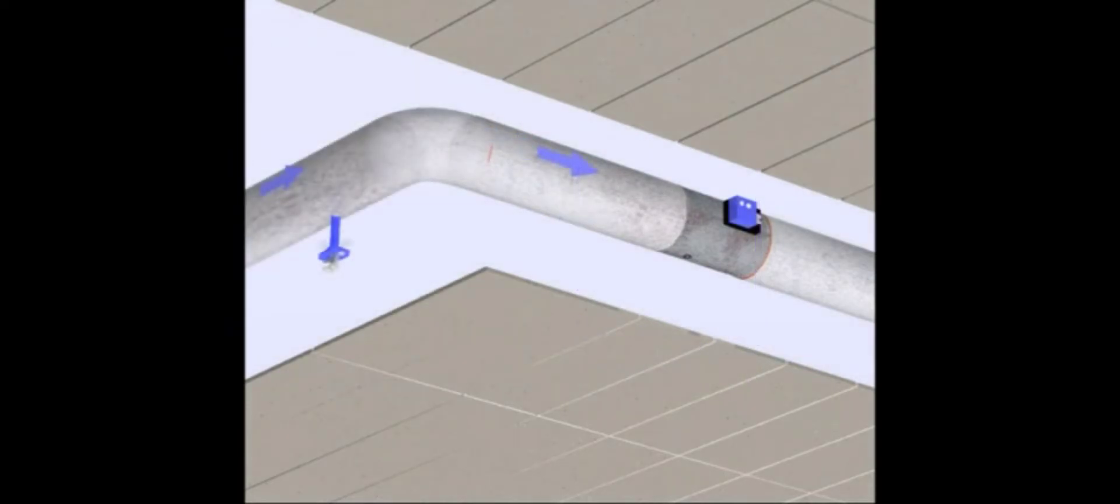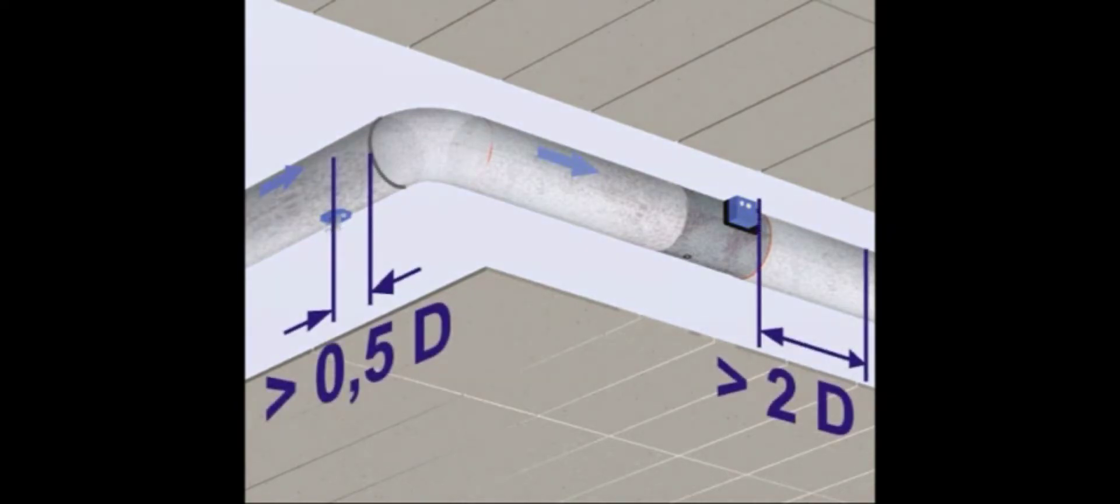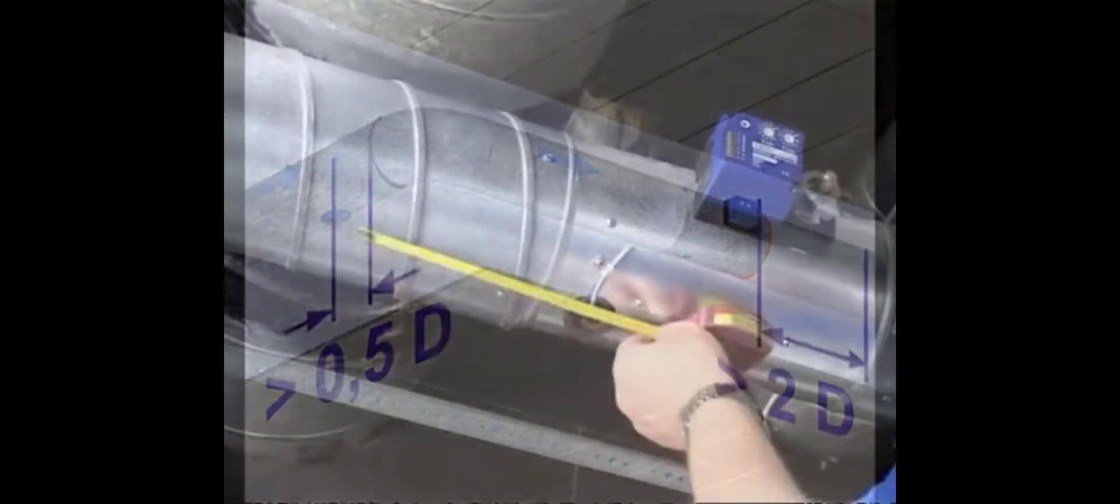Should the sensor, because of too little space, be placed for example in front of an elbow, keep a minimum distance of 0.5D from the elbow and a downstream of at least 2D behind the controller.